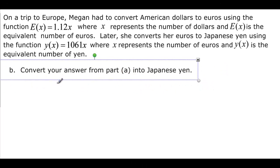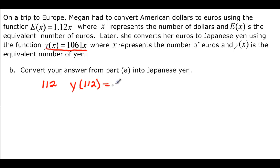So now the one is to convert our answer, which was 112 in part A, to Japanese yen, and that's this equation here. So we have Y of 112 is equal to 1,061 times that 112. And when we do that, we end up with a lot of yen: 118,832 yen.